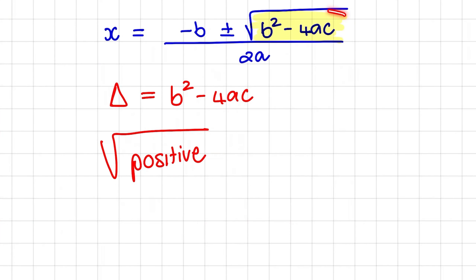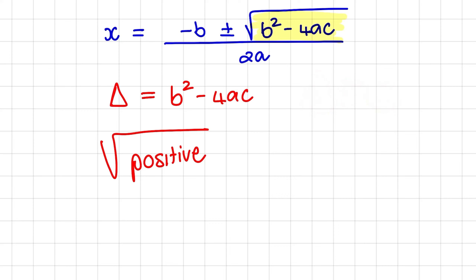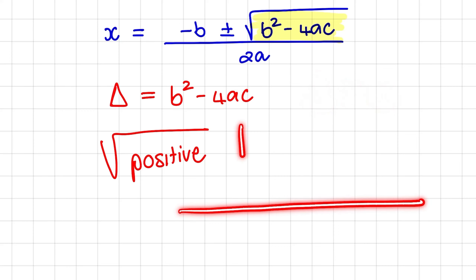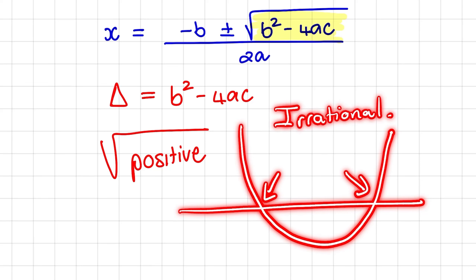Lastly, b squared minus 4ac can be a positive value that is not a perfect square, meaning delta is bigger than zero but not a perfect square. In that case we also have a parabola with two roots, but these roots are irrational values — decimals that do not terminate.